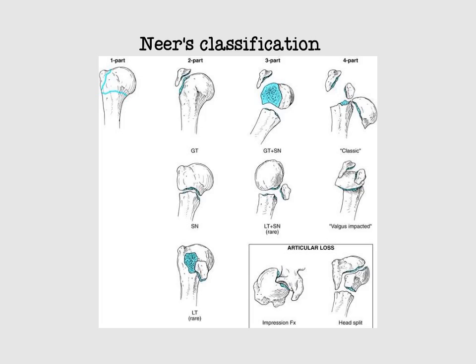Proximal fractures of the humerus are classified according to the Neer classification, which divides them into one-part, two-part, three-part, and four-part fractures. A one-part fracture means there is no displacement — the fracture is impacted and all fragments are close to each other.